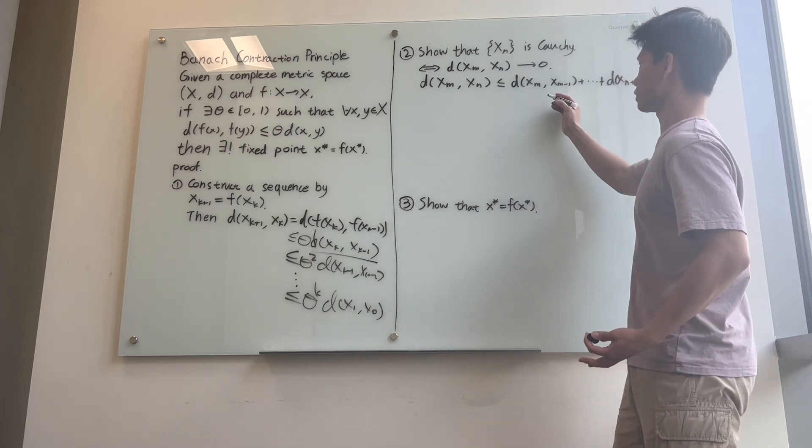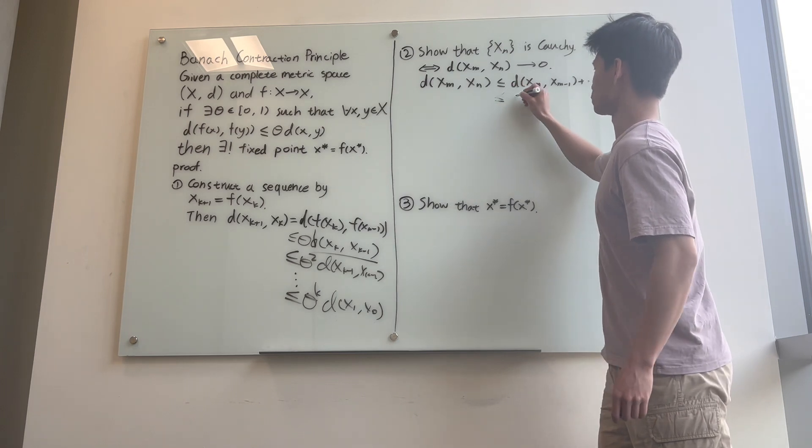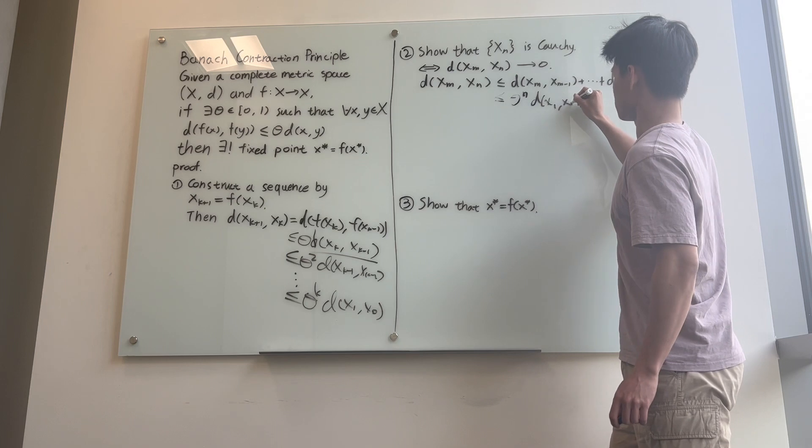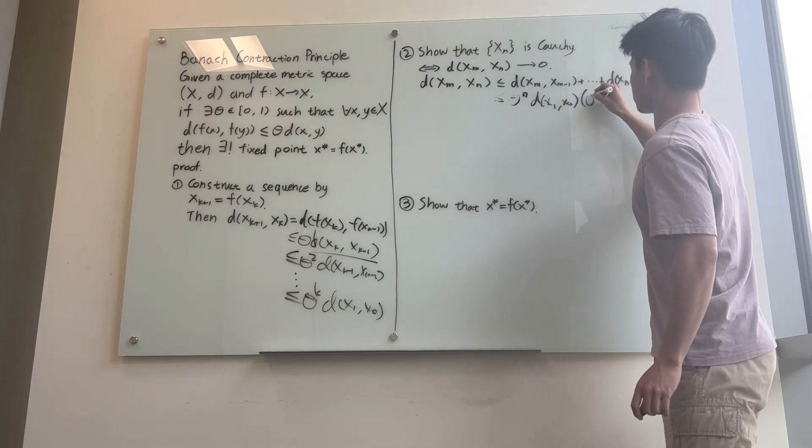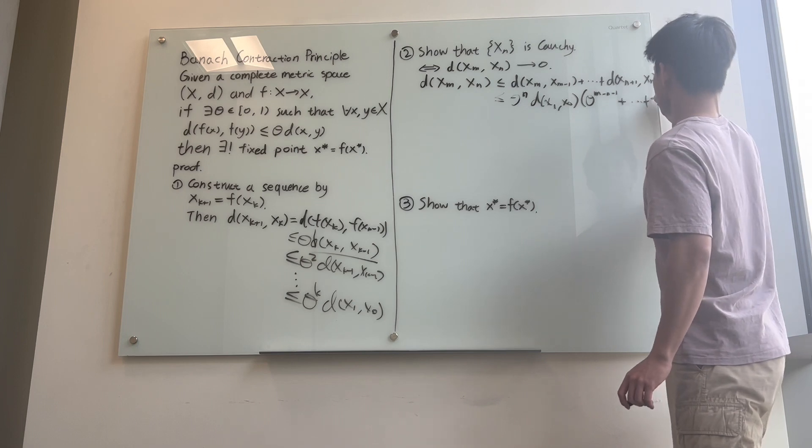And this thing, since they are all consecutive terms, by pulling a factor out, we can show that it's less than or equal to theta^n times d(x_1, x_0) times the sum from i=0 to m-n-1 of theta^i.